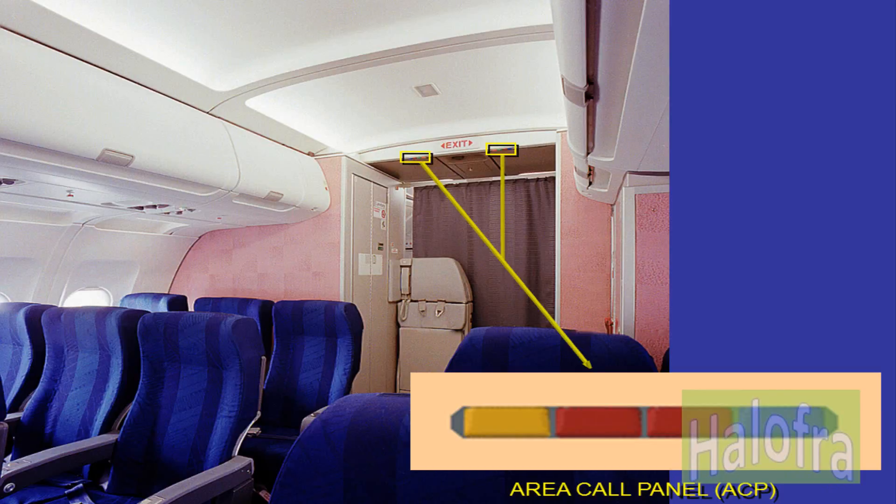The area call panel, ACP, indicates crew communication (pink steady or flashing), passenger call (blue steady), lavatory call (amber steady), and lavatory smoke detection (amber flashing). The ACPs are installed in the cabin ceiling at both ends of the passenger compartment.